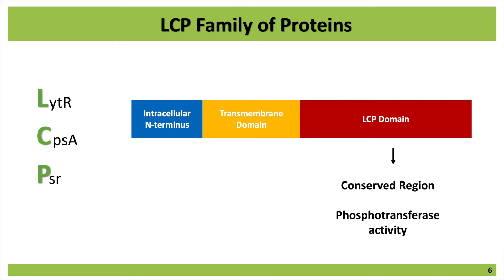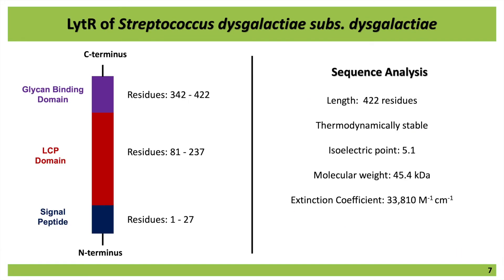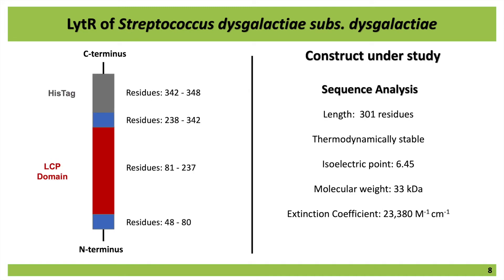Some of these proteins replace these two parts with a signal peptide. In my case, I'm working with the LCP protein of Streptococcus dysgalactiae subspecies dysgalactiae, which contains a short signal peptide, the LCP domain, and what we believe to be a glycan binding domain at the end of the C-terminus. However, I'm working with a protein construct that contains only the LCP domain and a small His-tag at the end of the C-terminus to help in the purification process.